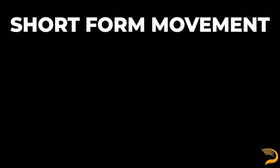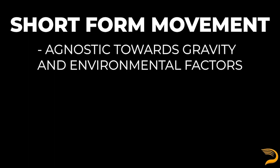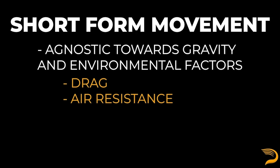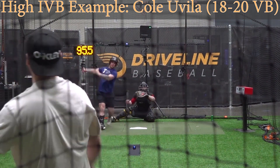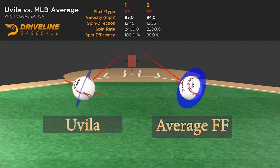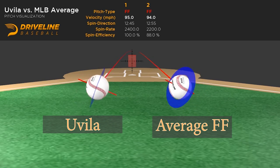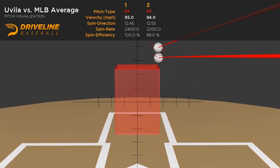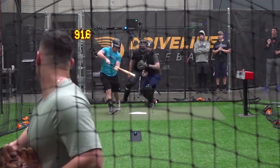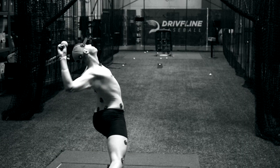We'll wrap things up with pitch movement. With our context of spin rate, active spin, and gyroscopic spin, we're ready to jump into what is ultimately the meat and potatoes of pitch quality: induced vertical break and horizontal break. These are short-form movement values, meaning they're agnostic towards gravity and other environmental factors such as drag or air resistance. The movement values are relative to a ball with no movement or spin. A pitch with 16 inches of vertical break doesn't actually move upward, but it does fight gravity better than a pitch with 13 inches of vertical break at the equivalent velocity. Human beings are currently not capable of throwing a pitch with enough velocity or movement to effectively get it to rise, but they're capable of getting hitters to swing underneath their fastballs by throwing pitches that effectively rise relative to the hitter's expectations.